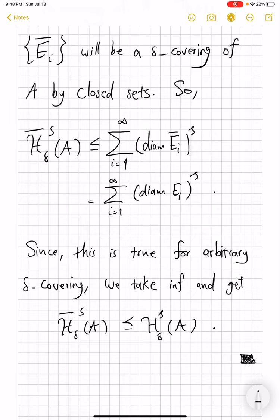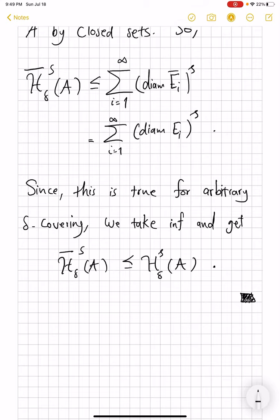And that proves the reverse inequality and we're done. So insisting on taking delta coverings from closed sets does not change neither the content nor the Hausdorff measure itself, and that's good to know because sometimes you do want to cover by sets with more properties. In this case, closed sets may be desirable in many scenarios. How about open sets? That's an interesting question.